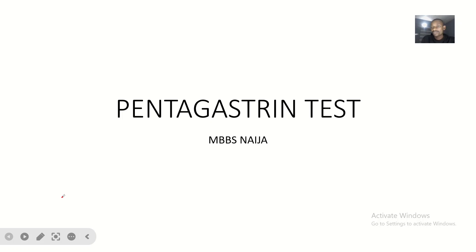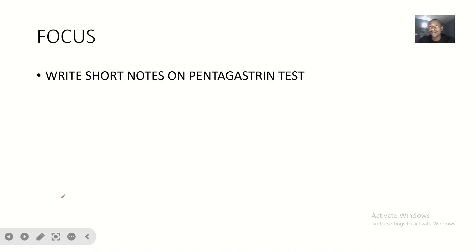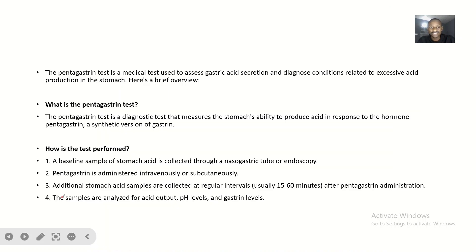Let's quickly look at another very important test done in the laboratory — the pentagastrin test. For students in an exam who are asked to write short notes on the pentagastrin test, it can be hard to know how to arrange your material: from the definition, to the indication of the test, to the procedure, to the interpretation of results. Without proper structure, you might end up writing a clogged essay, which is not ideal when reporting a laboratory result.